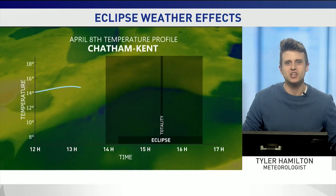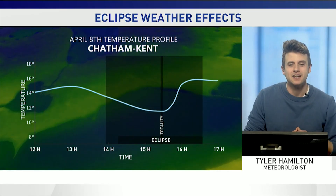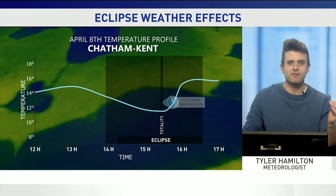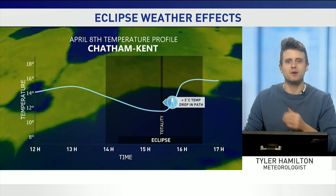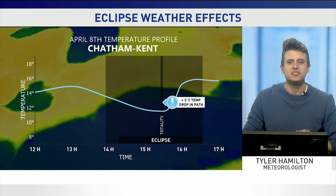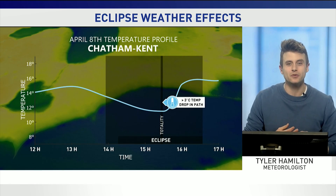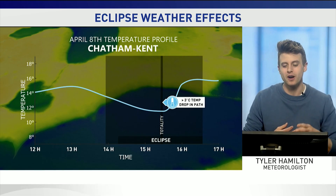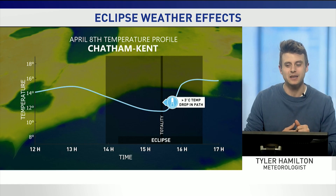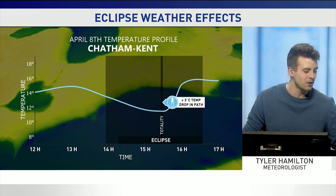All thanks to the moon's shadow, and that can have a profound effect on our temperature patterns, not following that typical diurnal cycle. Take Chatham-Kent, just north of Lake Erie — we had a temperature of 15 degrees at one o'clock, but by the time totality approached, the temperature fell below 12.